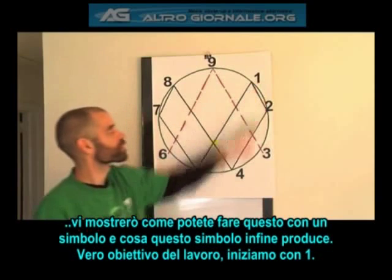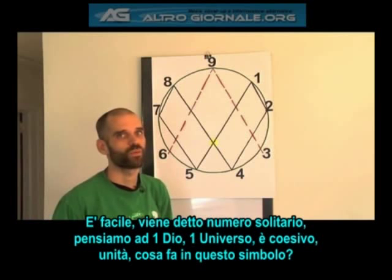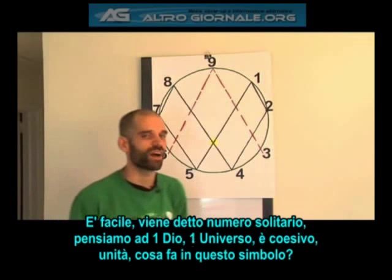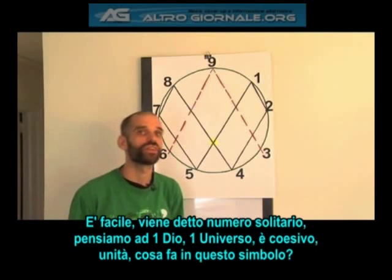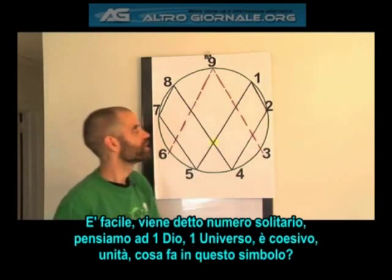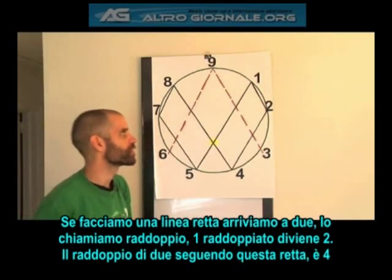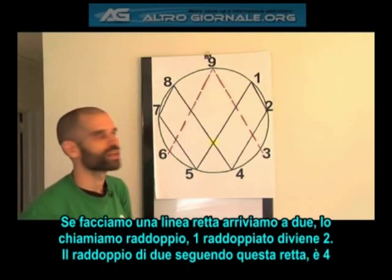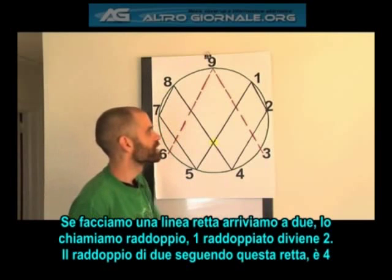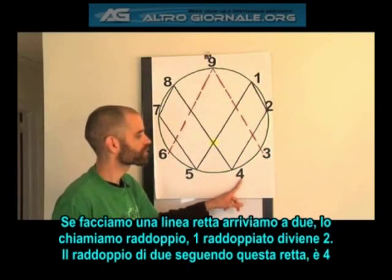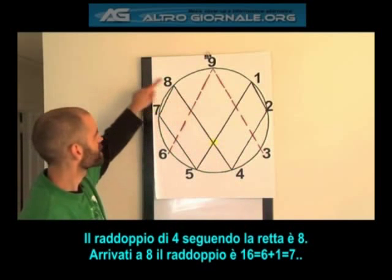So let's start here with 1. It's a really easy number — oftentimes they say 1 is the loneliest number, or we might think of 1 God, 1 universe. It is a cohesive number, a unity. If we draw a straight line connecting it to the next number, it goes to 2. That is called doubling — 1 doubled becomes 2. 2, if it doubles, and we follow this line again, becomes 4. 4, if we double, following our line, becomes 8.